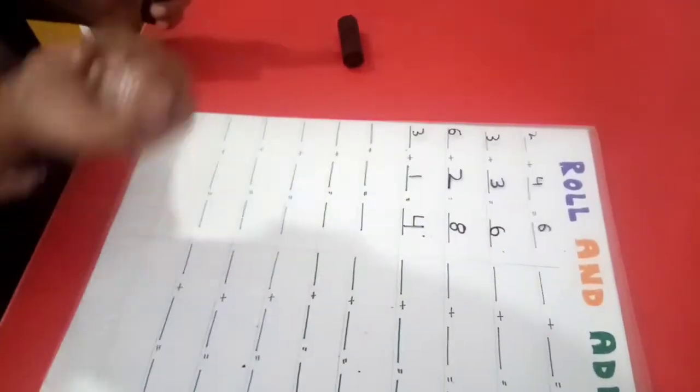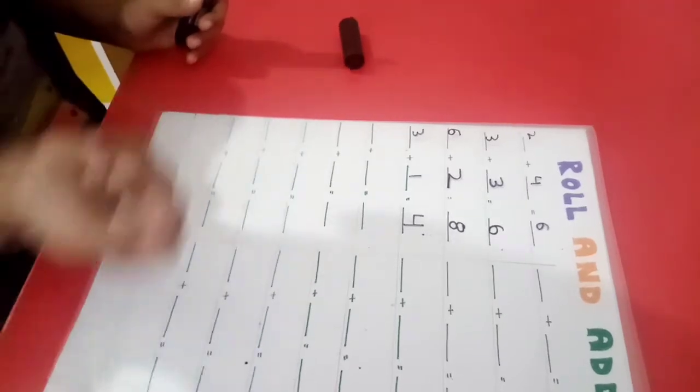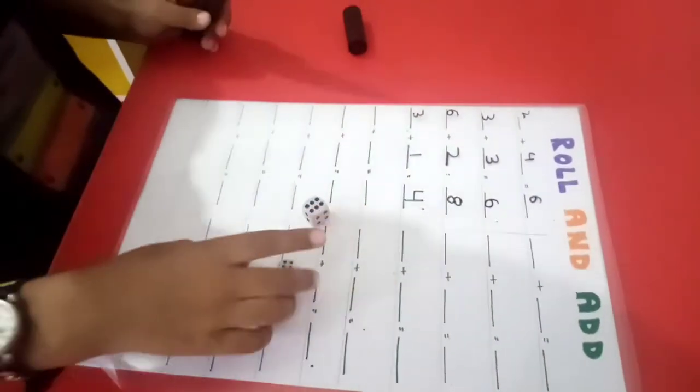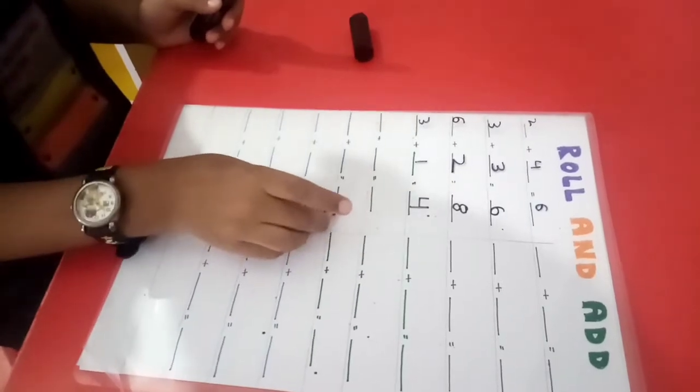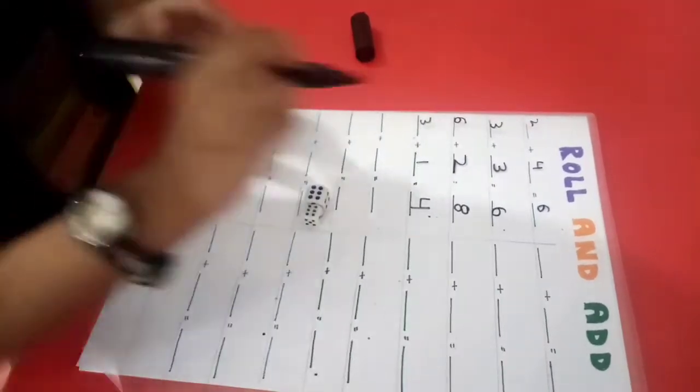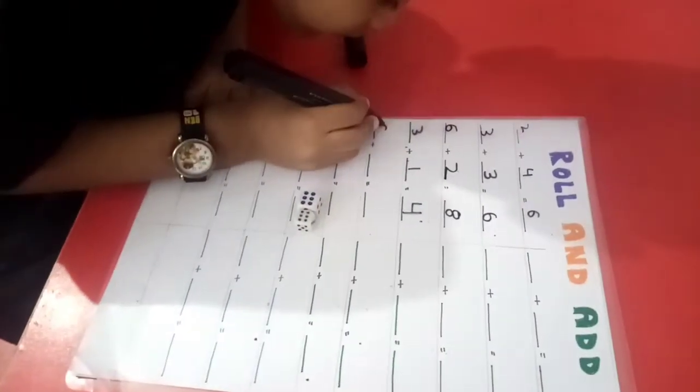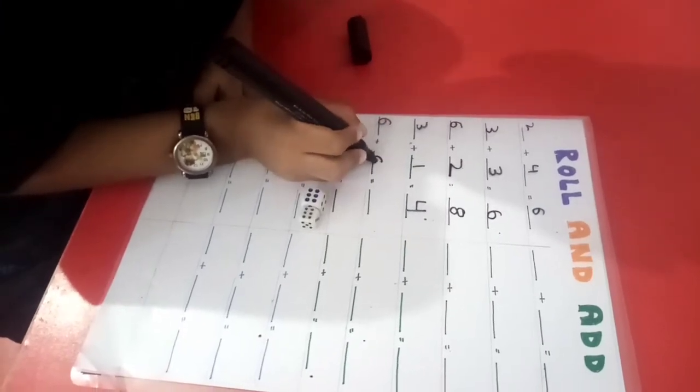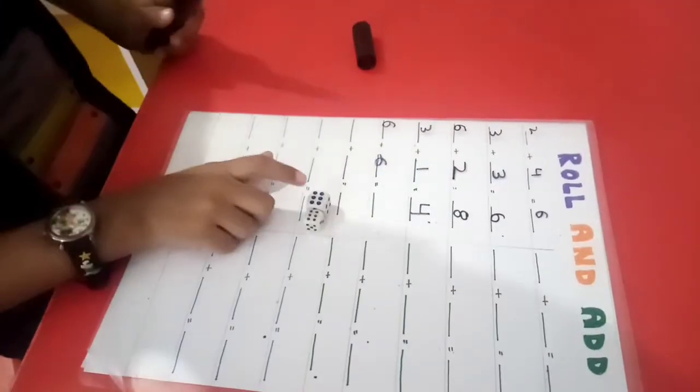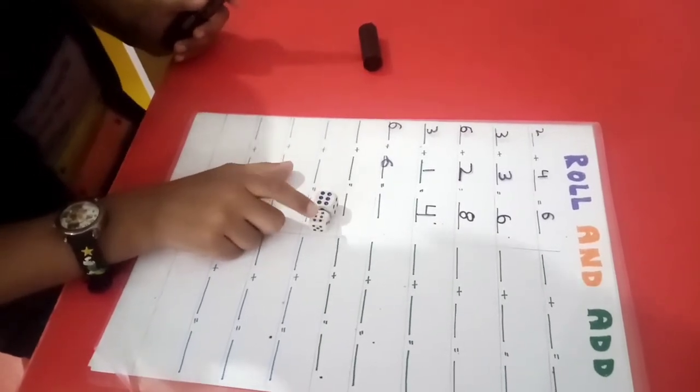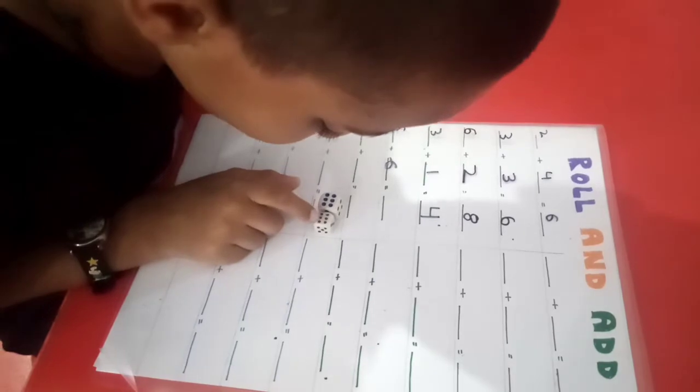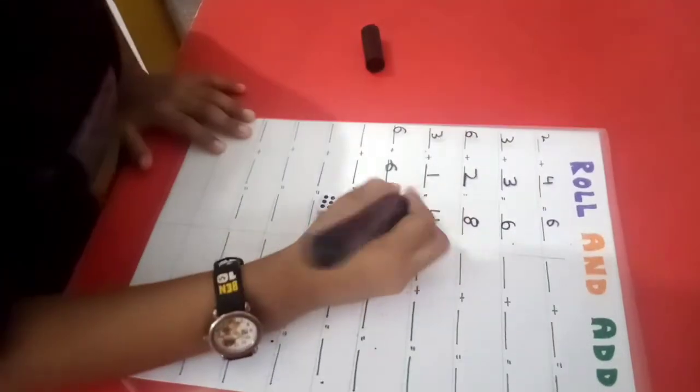Roll the dice again. 6 and 6. 6 and 6, write down. And what is the answer? 1, 2, 3, 4, 5, 6, 7, 8, 9, 10, 11, 12. 12 is the answer. Good.